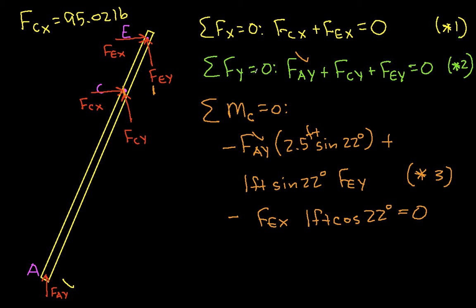And FCY is equal to minus FAY minus FEY. We know those two values, so we can say that FCY is equal to 541.92 pounds.